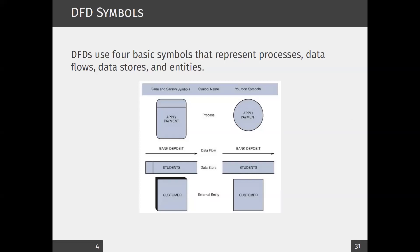The last symbol is external entities — other parties or external sources. They could represent other users or other organizations interacting with the system. External entities are represented using squares.